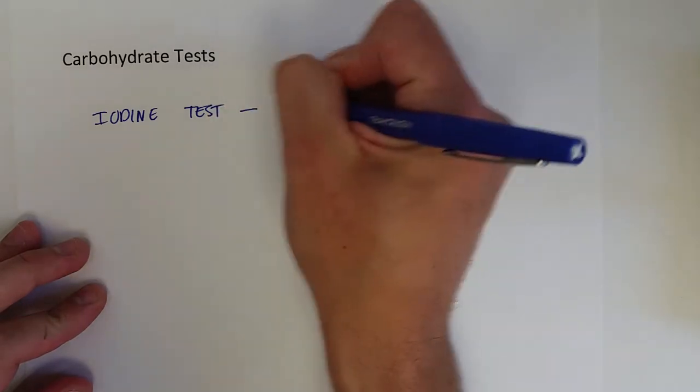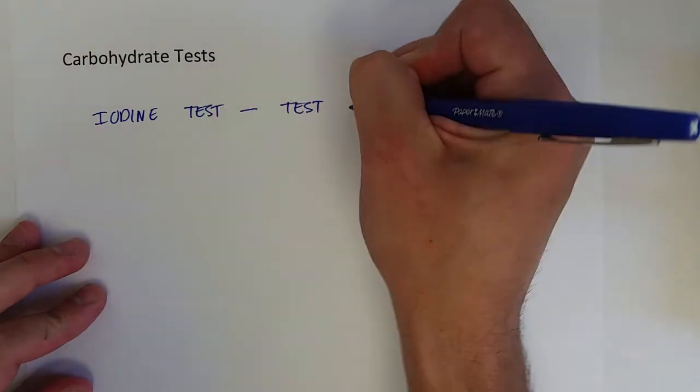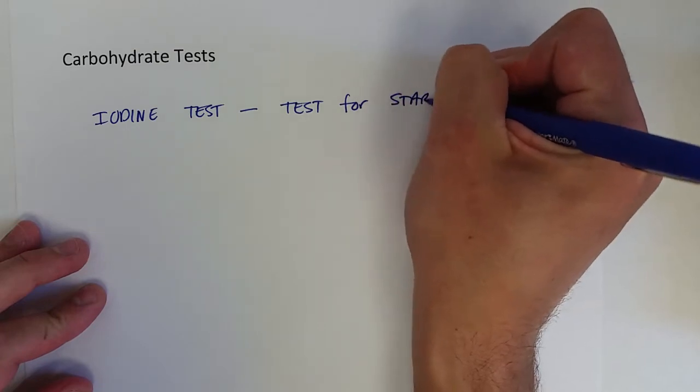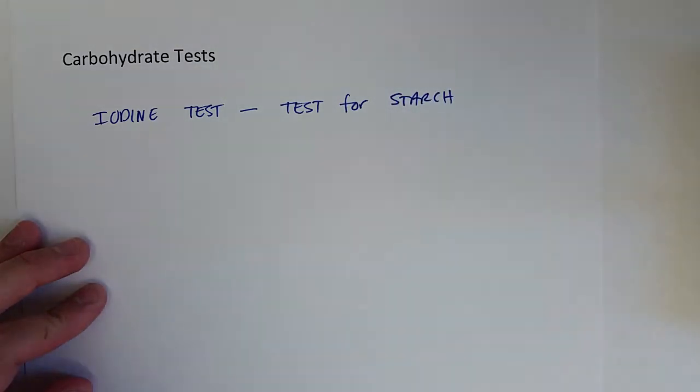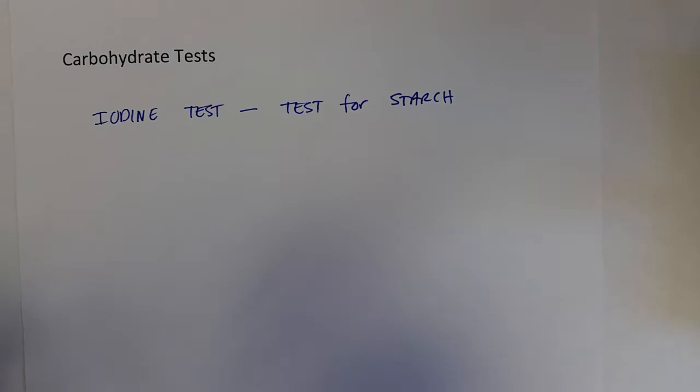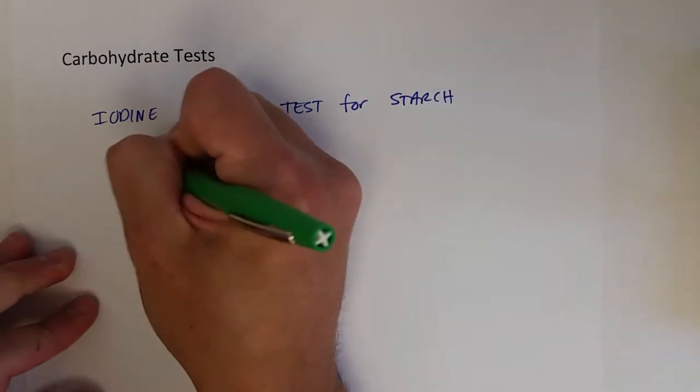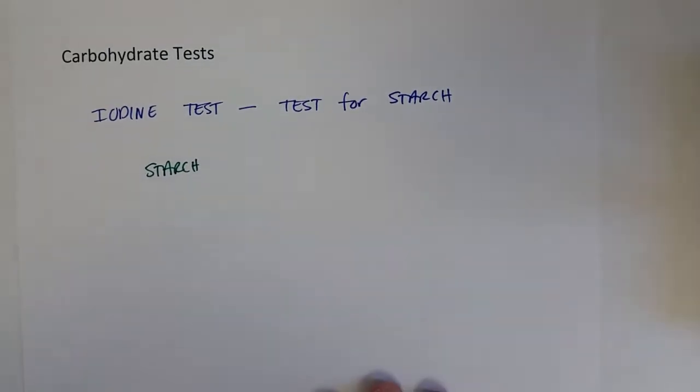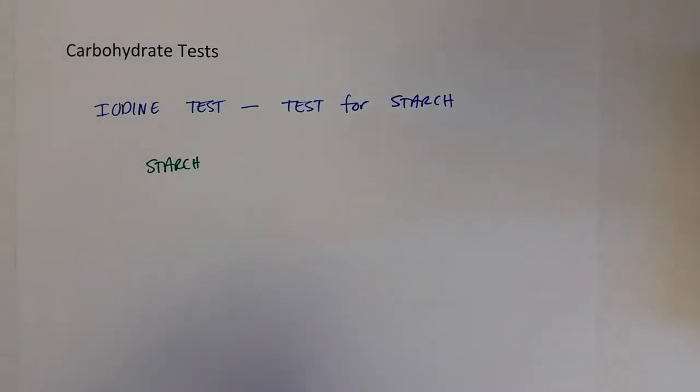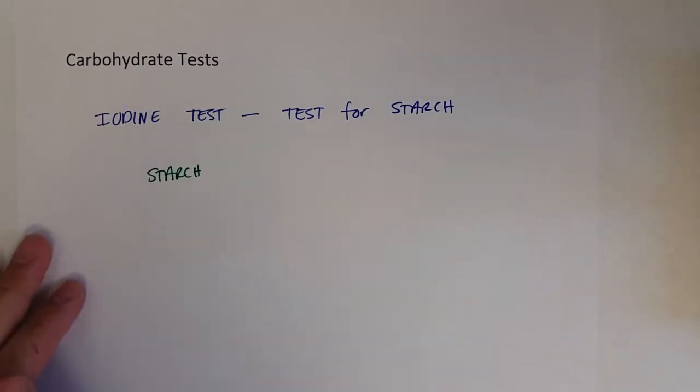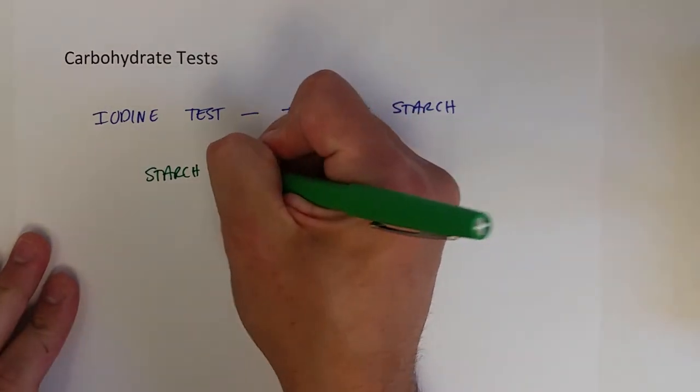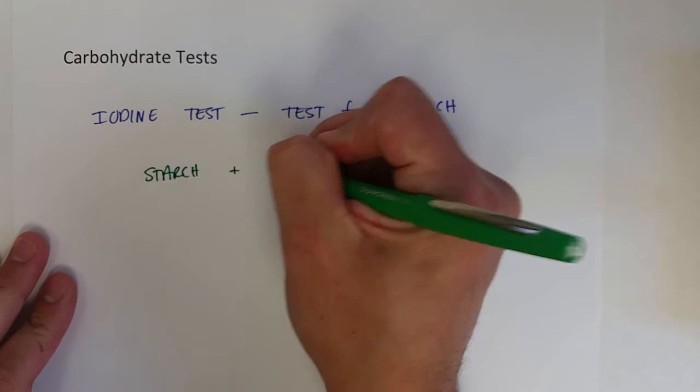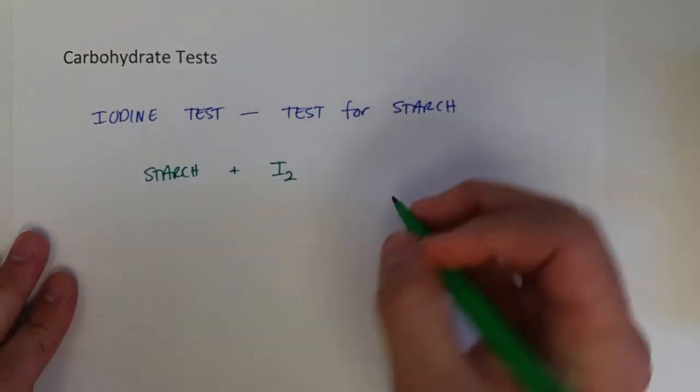This one is actually a test for starch, the polysaccharide starch. If you have a starch molecule in solution, it's basically colorless. Starch forms a sort of suspension or colloid, so it can get sort of cloudy, but for all intents and purposes we'll consider it colorless.